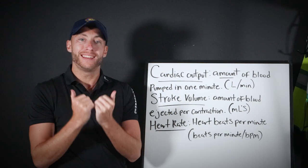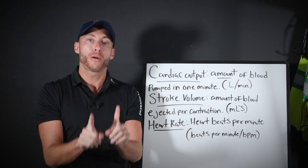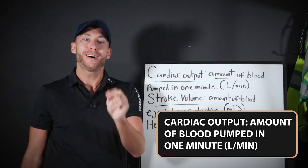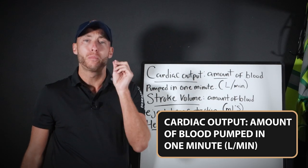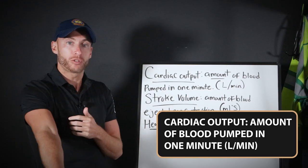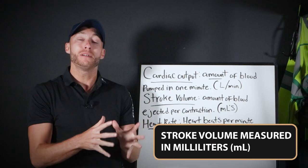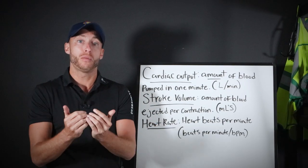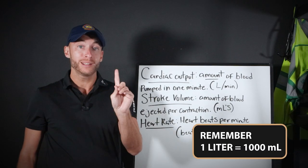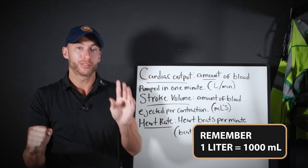Cardiac output is based on liters per minute. It's the amount of blood that the heart is able to pump in one minute, measured in liters. Stroke volume is measured in milliliters — it's smaller. One liter equals 1,000 milliliters; that's how it's measured.